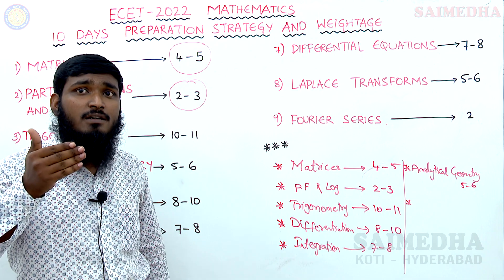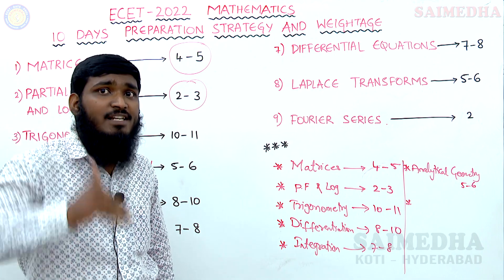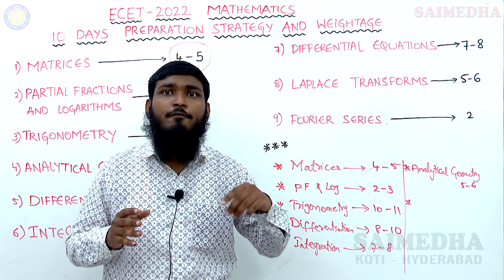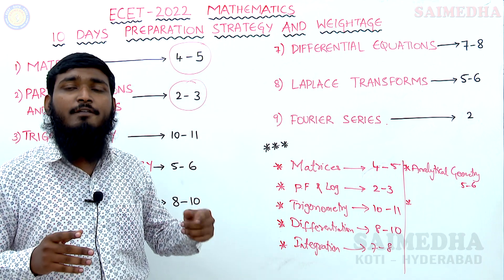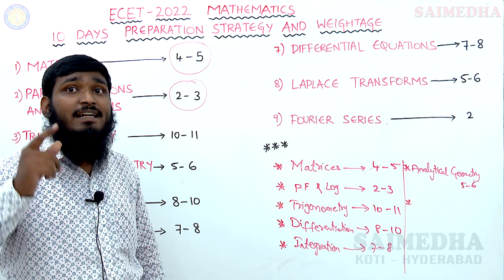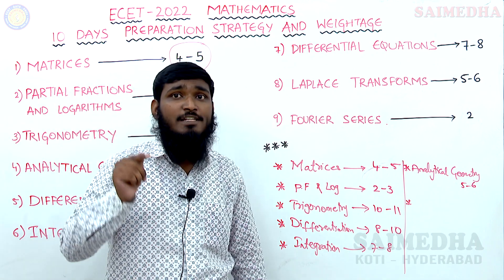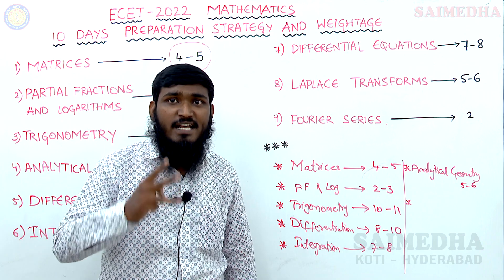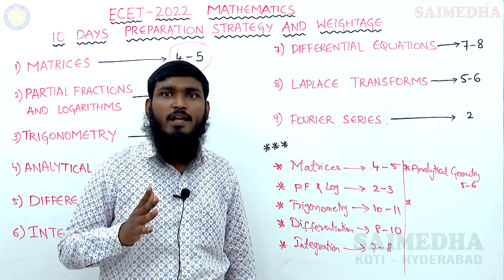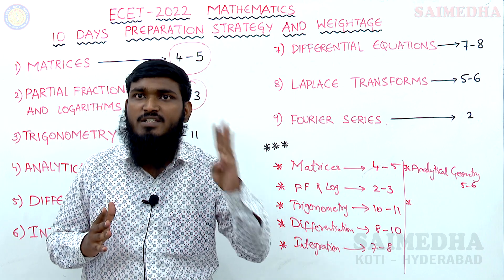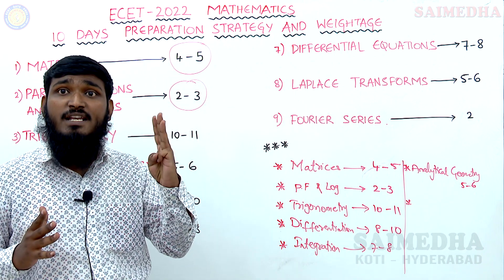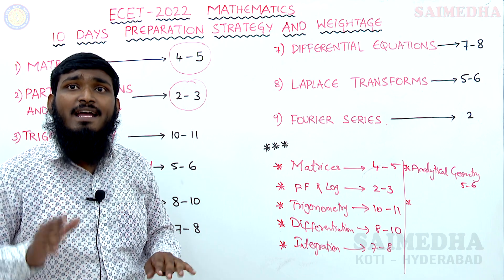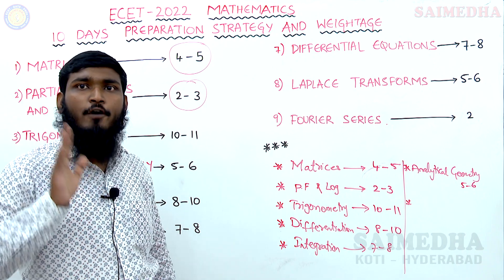After identifying your level from the self-test, spend more time preparing in areas where you are weak. Then attempt the Special Tests — there are 3 special tests for Mathematics (Special Test 1, 2, and 3). After that, attempt the 4 Mock Tests (Mock Test 1, 2, 3, and 4). Completing all these tests is sufficient preparation for each topic.